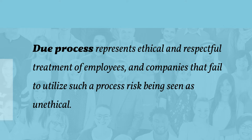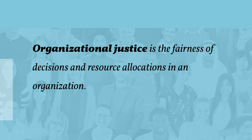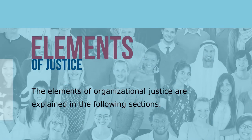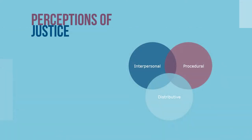Organizational justice is a key part of due process. Organizational justice is fairness of decisions and resource allocations in an organization. Employees' perceptions of fairness and justice in the workplace influence their attitudes and behaviors. Individual perceptions of fairness or justice in the workplace depend on at least three different types of assessments: the process of decision making, the actual decisions made, and how the decision is explained to employees.